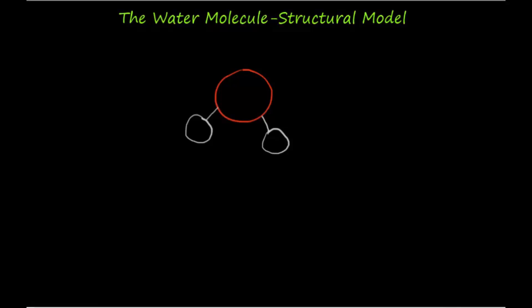Let's quickly review some details from the structural model of water. The molecule consists of three atoms arranged in the approximate configuration illustrated here. The single oxygen atom has a weight of 15.99 grams in atomic mass units and corresponds to element number 8 of the periodic table of elements. Though it has eight electrons, its outer shell contains six electrons available for bonding with other atoms, which I am placing around the oxygen atom in our model.